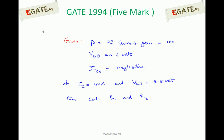First, we will see what are the given quantities. Beta is given, that is common emitter current gain, which is 100. VBE is also given, 0.6 volts. IC0 is negligible. To get IC of 1 mA and VCE of 2.5 volts, we need to calculate R1 and R3 values.